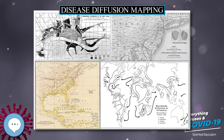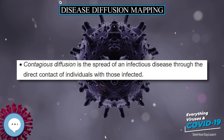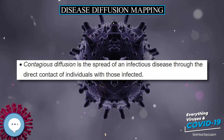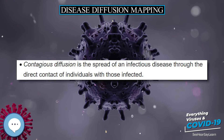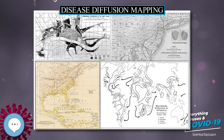Disease Diffusion Mapping. Disease diffusion occurs when a disease is transmitted to a new location. It implies that a disease spreads, or pours out, from a central source. The idea of showing the spread of disease using a diffusion pattern is relatively modern, compared to earlier methods of mapping disease, which are still used today.